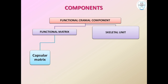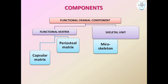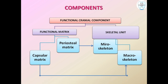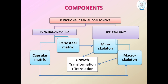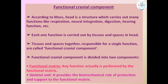There are two types of Functional Matrix: Capsular Matrix and Periosteal Matrix. The Skeletal Unit is also of two types: Microskeletal Unit and Macroskeletal Unit. The periosteal matrix affects the microskeletal unit, whereas the capsular matrix affects the macroskeletal unit. These then undergo transformation and translation of bone, which leads to bone growth.